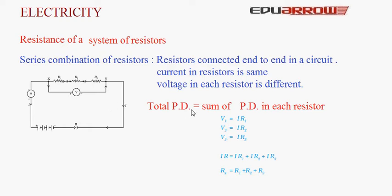By Ohm's law, V1 = IR1, V2 = IR2, and V3 = IR3. Substituting into V = V1 + V2 + V3, we get IR = IR1 + IR2 + IR3. Cancelling I on both sides, we get R = R1 + R2 + R3. This means we can replace the three resistors with a single equivalent resistance R equal to R1 plus R2 plus R3, such that the same current flows and the same effect is produced.